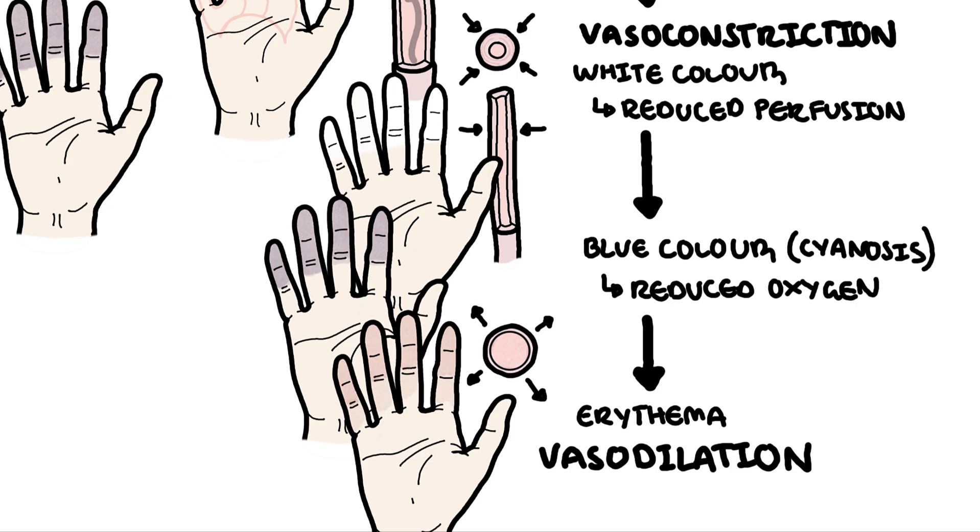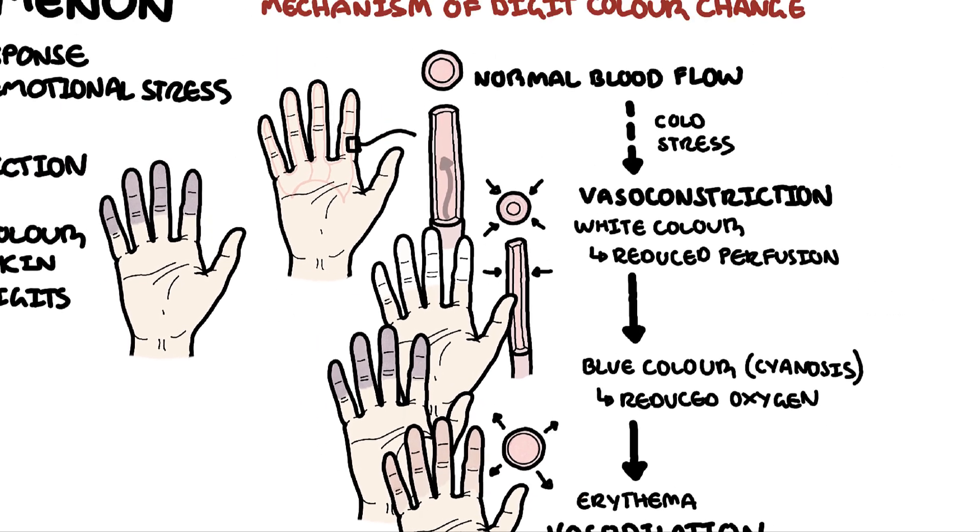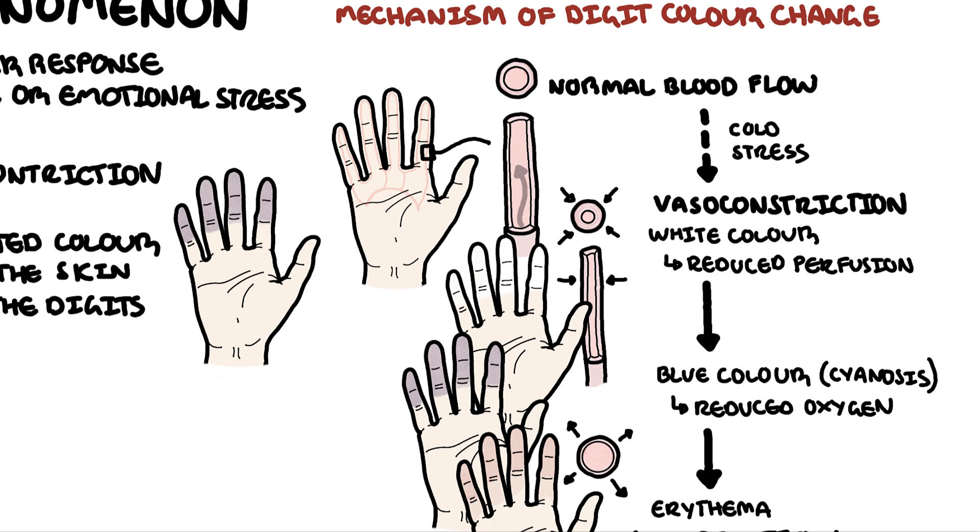This is the triphasic response seen in Raynaud's phenomenon: white, blue, and red. The fingers then eventually return to normal color again.